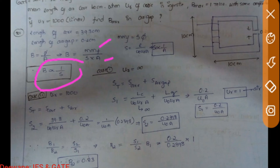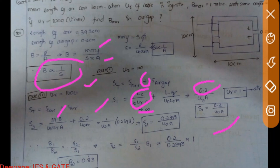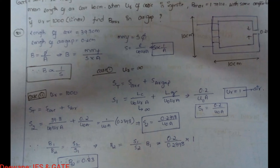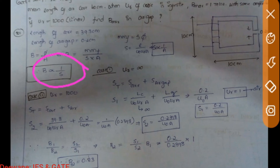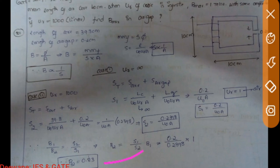In Case 1, μᵣ = infinity, so the core reluctance term is zero, and only the air gap contributes: S₁ = 0.2/(μ₀A). In Case 2, μᵣ = 1000, so S₂ = (39.8/1000 + 0.2)/(μ₀A) = 0.2398/(μ₀A). Using B₁/B₂ = S₂/S₁, we get B₂ = B₁ × (0.2/0.2398) ≈ 0.83 Tesla. This approach — deriving the reluctance ratio — is sufficient for GATE and any competitive exam.